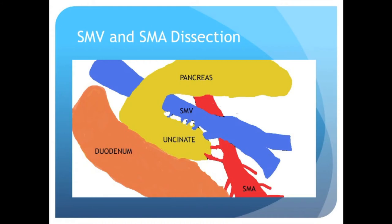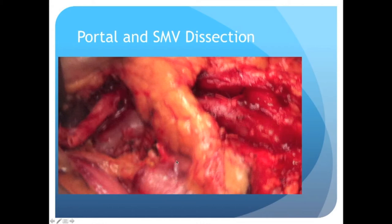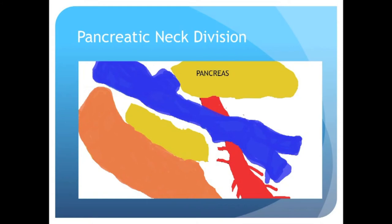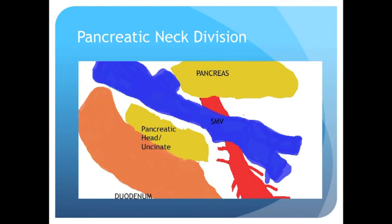They supply the majority of the arterial blood flow to the head and uncinate process. The portal vein is here, the neck of the pancreas is here, and the superior mesenteric vein is here. The hepatic artery with ligation of the gastroduodenal artery is depicted here from a live photo. Pancreatic neck division and removal of the uncinate process from the mesenteric vessels is the key to performing a safe procedure. As one can see in this animation, the uncinate and head have been dissected free of the retroperitoneum, superior mesenteric vein, and superior mesenteric artery.